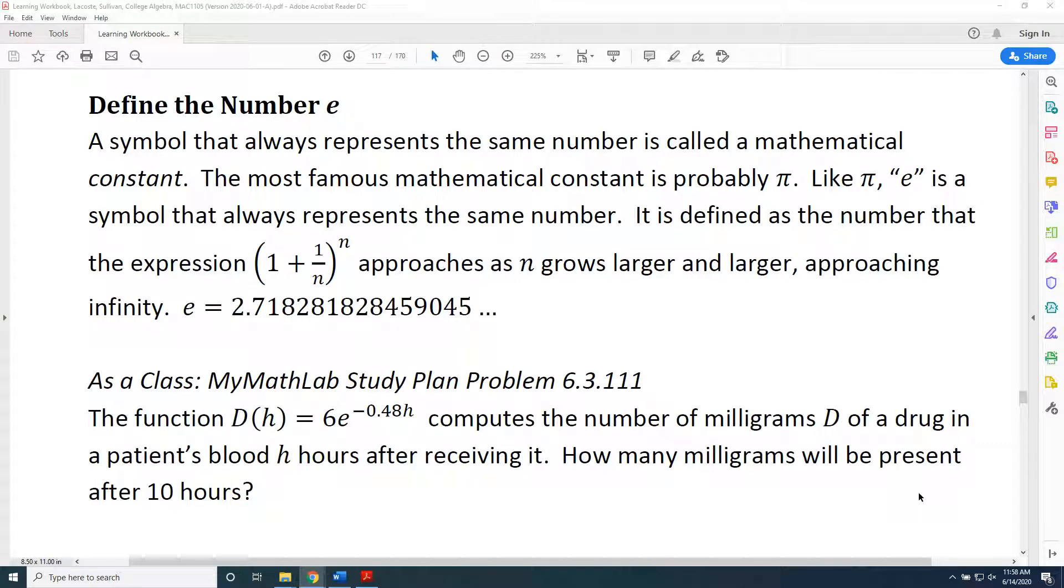The topic of this video is defining the number e. A symbol that always represents the same number is called a mathematical constant. The most famous mathematical constant is probably pi.